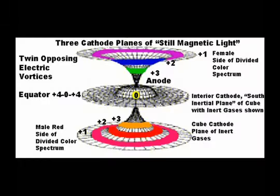Twin opposing electric vortices are projected from the inert gas planes of cold cathode magnetic stillness of the cube wavefields of space into their opposite sexual mates, where they meet creating spheres of intense heat with an equatorial plane of expansion and maximum radiation.